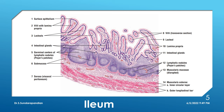In the lamina propria you can make out intestinal glands called crypts of Lieberkühn, similar to jejunum and duodenum. Also in the lamina propria are numerous lymphatic nodules called Peyer's patches. Sometimes, if there are more numbers of lymphatic nodules, they may extend into the submucosa by penetrating the muscularis mucosa.